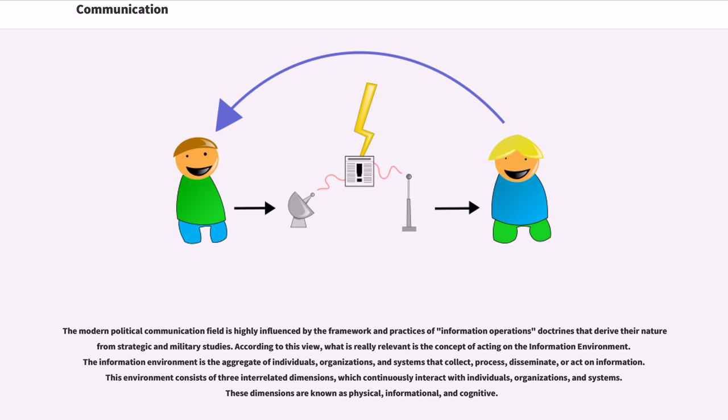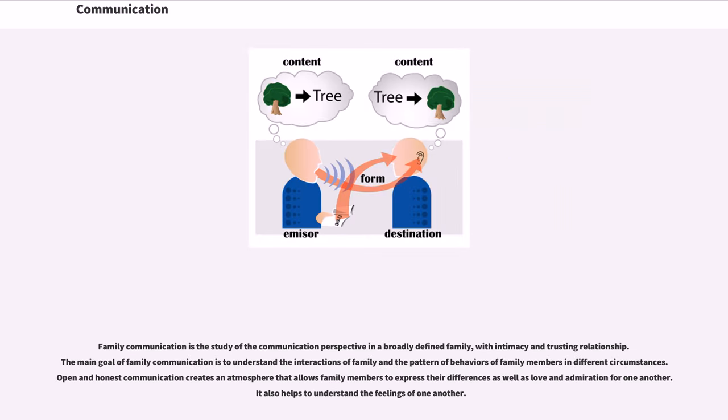Family communication is the study of the communication perspective in a broadly defined family with intimacy and trusting relationships. The main goal of family communication is to understand the interactions of family and the pattern of behaviors of family members in different circumstances. Open and honest communication creates an atmosphere that allows family members to express their differences as well as love and admiration for one another. It also helps to understand the feelings of one another.